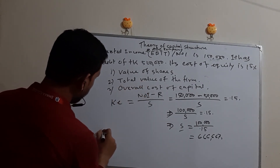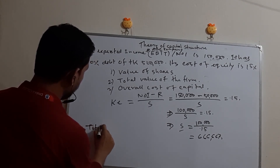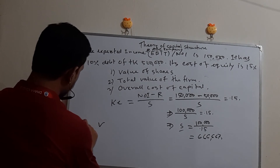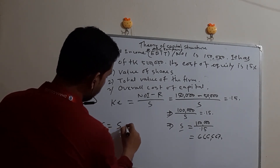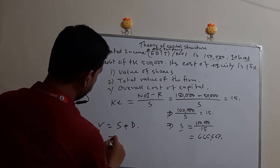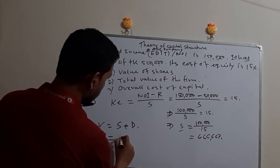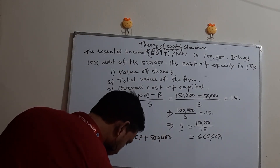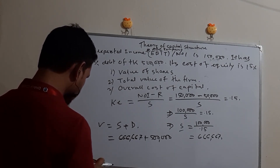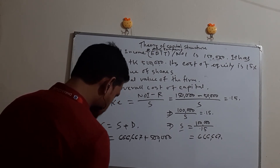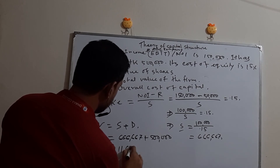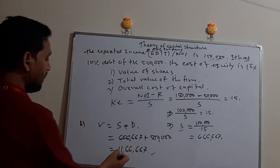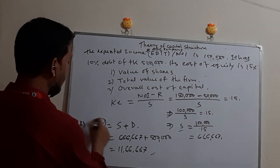Next, the total value of the firm V equals S plus D, where S is market value of shares and D is debt. So V equals 6,66,667 plus 5,00,000, which equals 11,66,667 Taka.